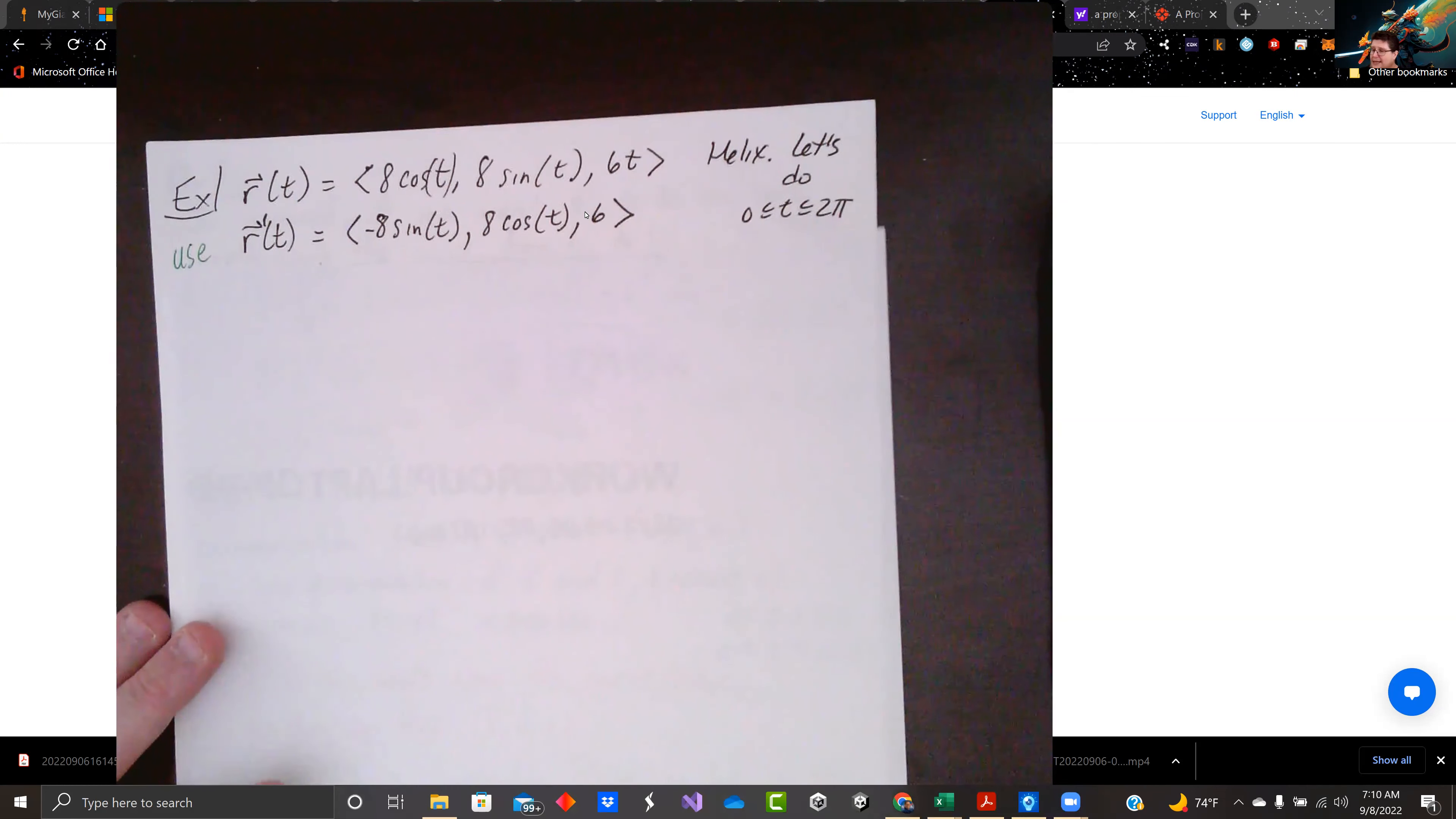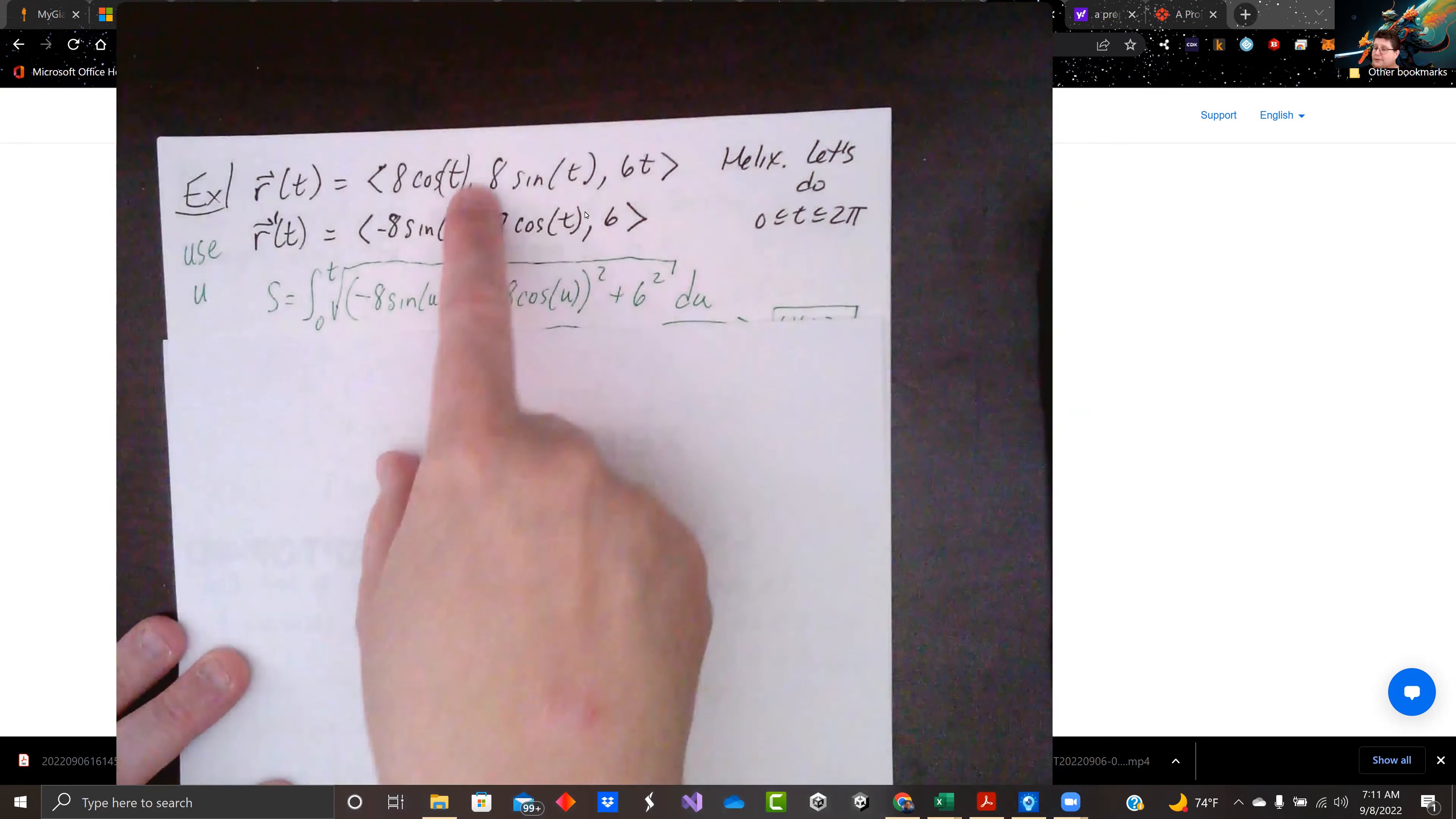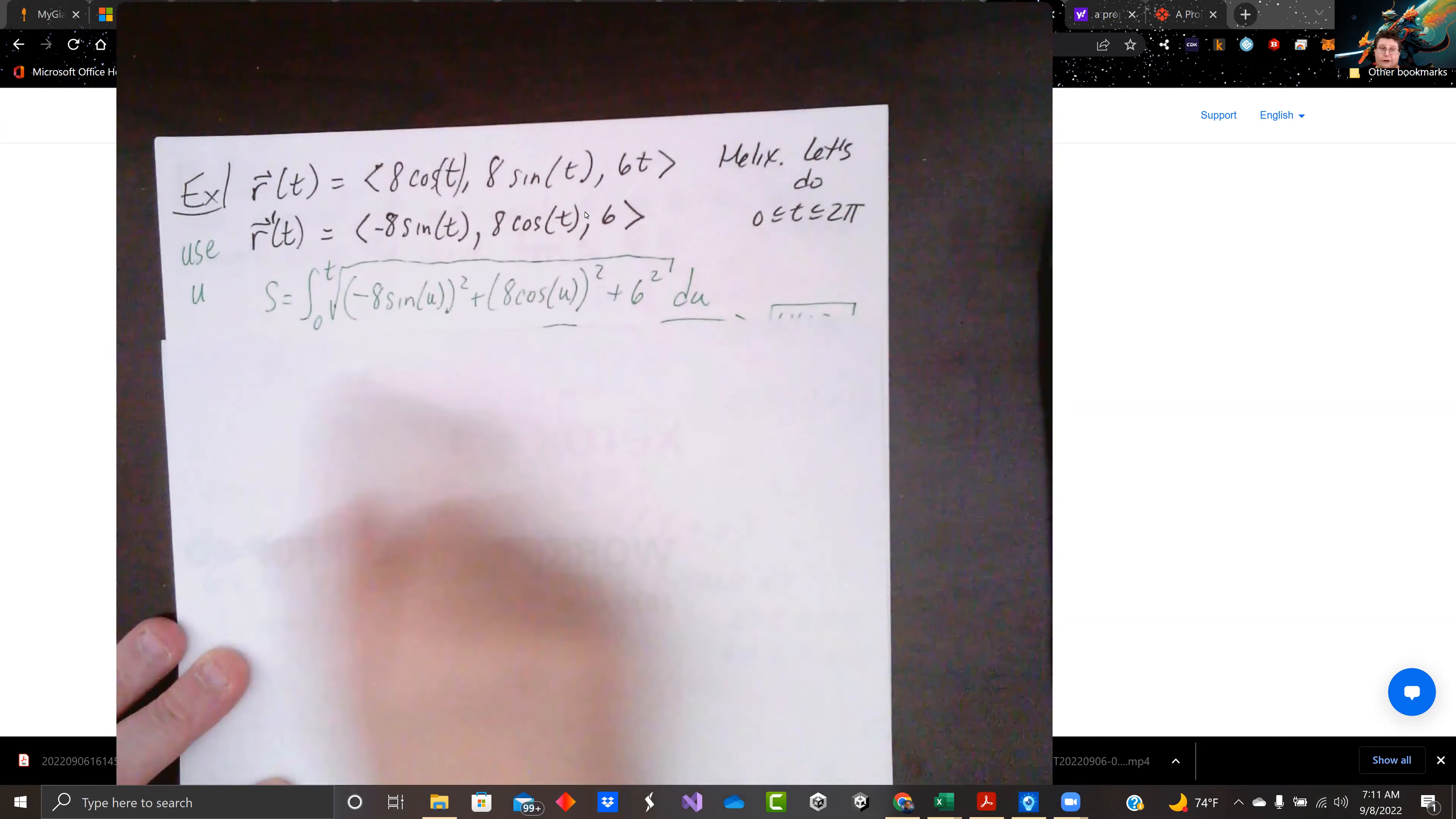We do r prime of t, we have negative 8 sine t, 8 cosine t, and 6, which is not 0 for all t. So when we use u, we replace t with u.